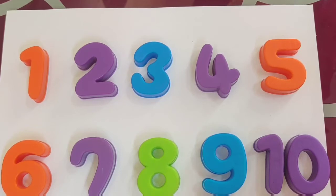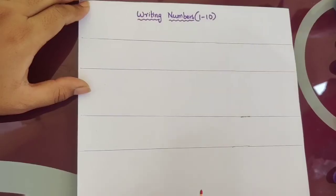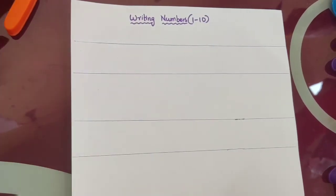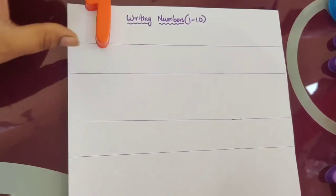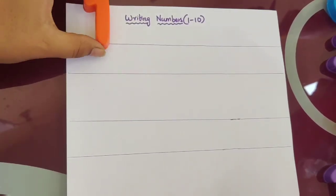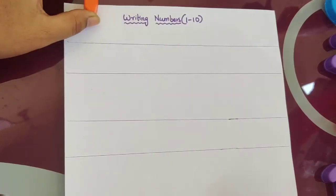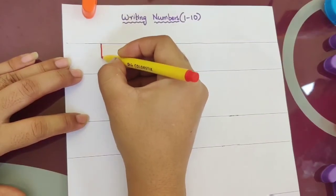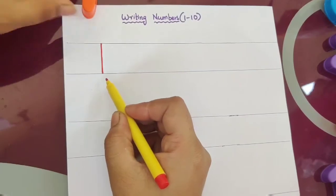Now let's see how to write each of them. Now children, we are going to learn writing numbers. So, the first number — what I have taught you? Number 1. How does it look? Like a straight line. So, 1 — this is number 1.